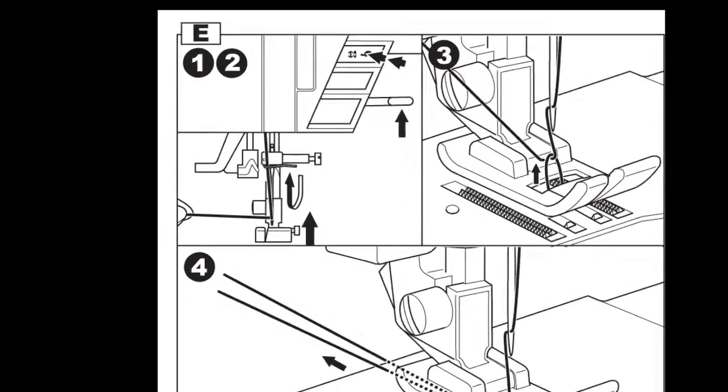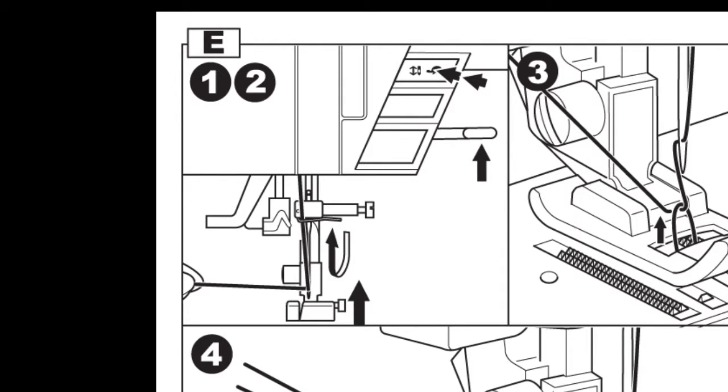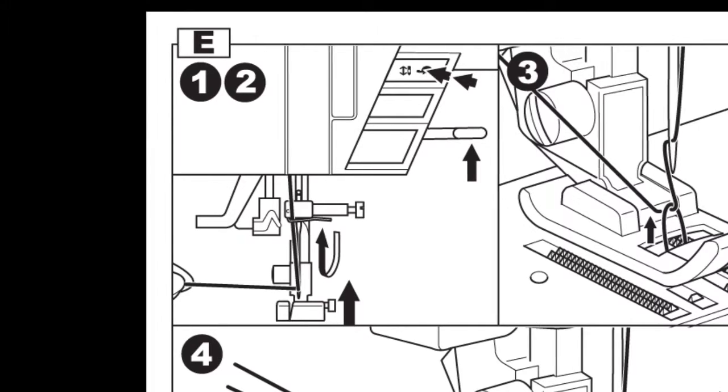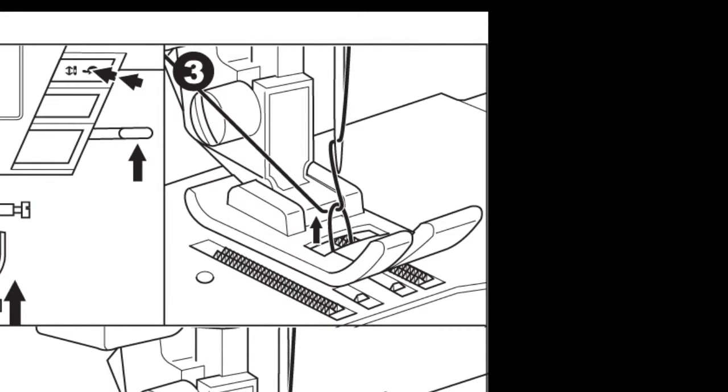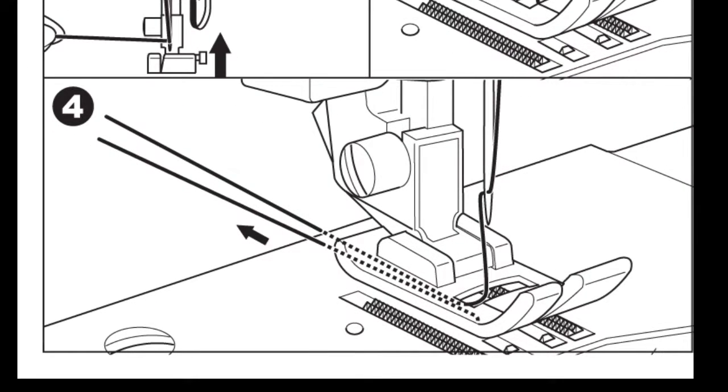To draw up the bobbin thread, raise the presser foot. Hold the thread loosely and press the needle up-down button twice from the up position. Pull the upper thread lightly so that this will bring the bobbin thread up into a loop. Pull both threads about 4 inches toward the back of the presser foot.